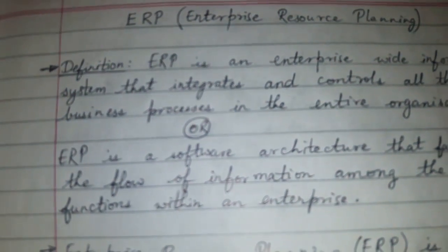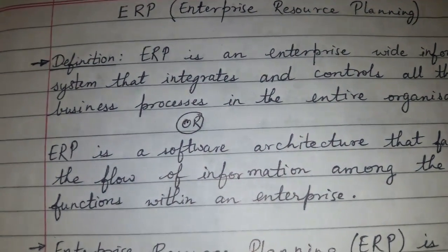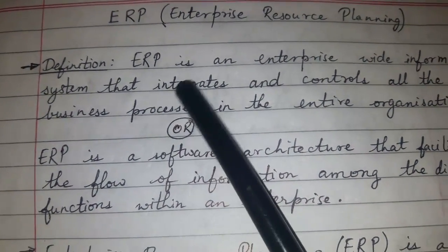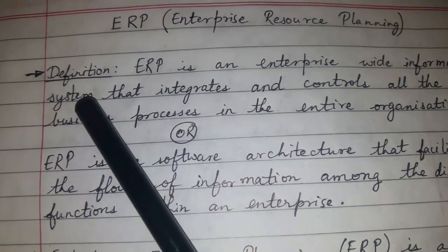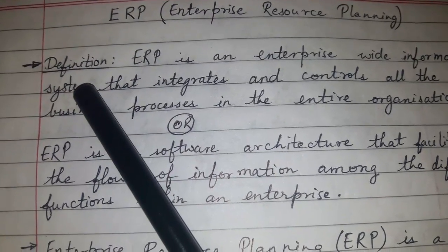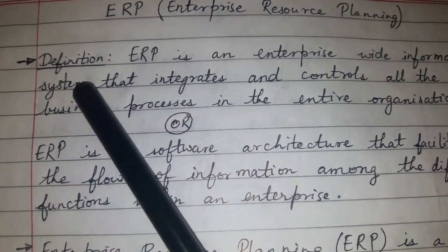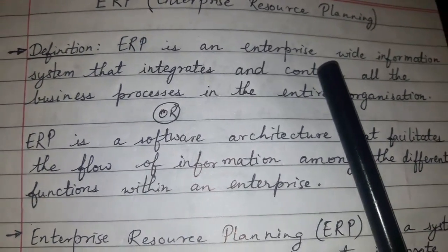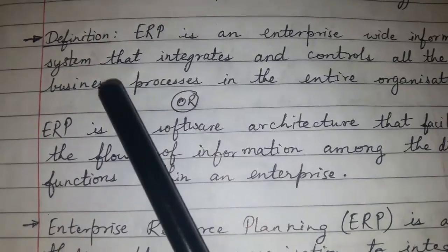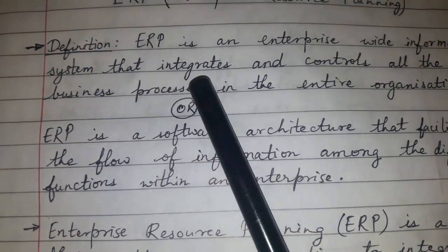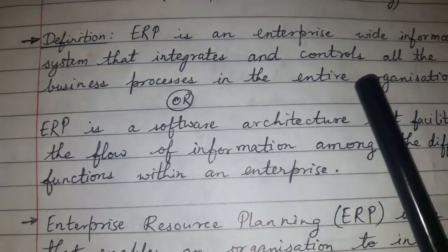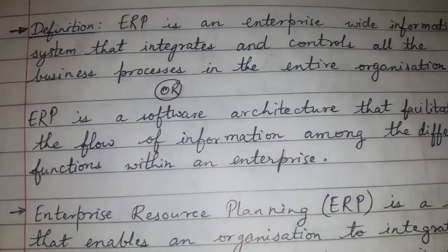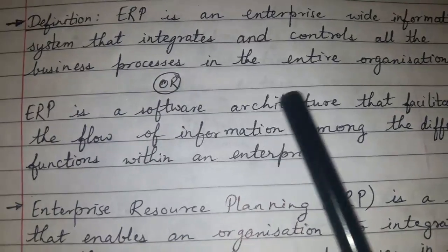Friends, today's topic of discussion is ERP or Enterprise Resource Planning. The definition of ERP can be given as: ERP is an enterprise-wide information system that integrates and controls all the business processes in the entire organization.